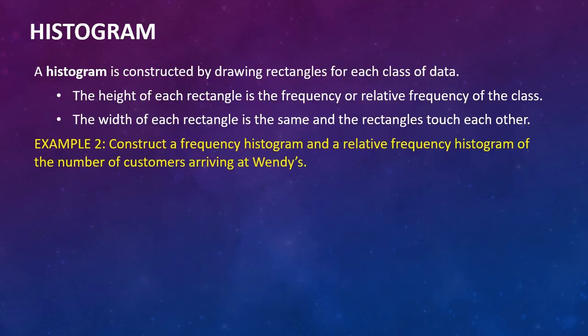A histogram is a new kind of bar graph, if you will, and it's constructed by drawing rectangles for each class of data. The height of the rectangle is the frequency or relative frequency of the class, which is what we saw exactly with a bar graph, and the width of each rectangle is the same and the rectangles touch each other, and this is really the difference between a histogram and a bar graph.